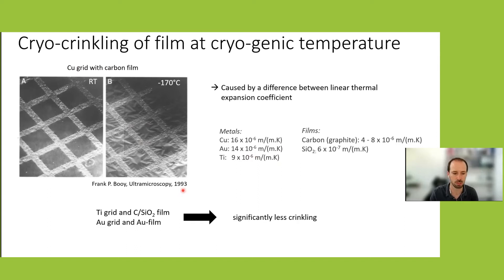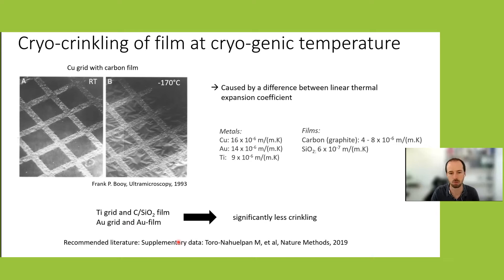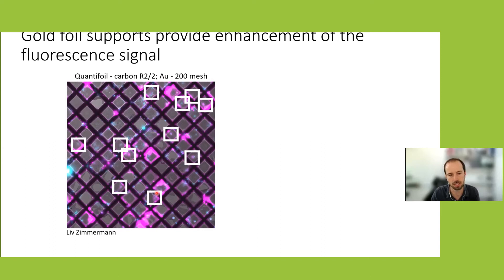To avoid cryo-crinkling, one can choose titanium grids — which have a much lower linear thermal expansion coefficient — covered with carbon or silicon dioxide, or use gold grids with gold film. This is nicely described in a recent paper from Yuria Muhammad's lab, with extensive supplementary data worth consulting. Gold foils also have an interesting effect on cryo-light microscopy: they increase the fluorescent signal, which may be useful when the fluorophore signal is very weak.